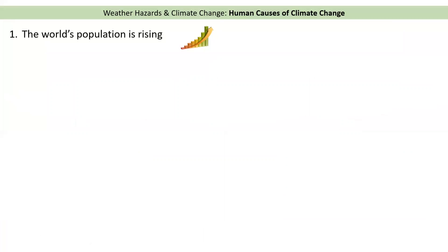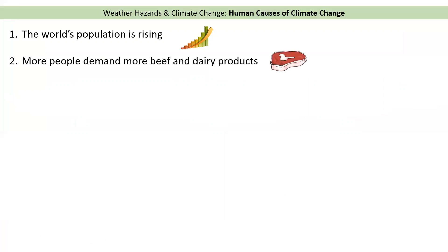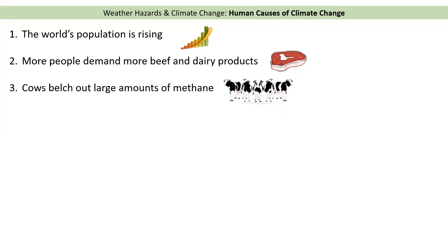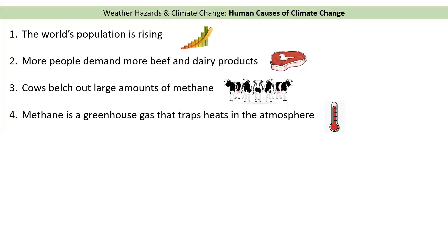There's another human cause of climate change, and this one is to do with methane. We know that the world's population is rising — we're over 7 billion people now and it will continue rising to 9 to 11 billion. More people means more demand for dairy products like milk and cheese, and more demand for beef. Therefore we need to rear more cows, and cows belch — which means burp — very large amounts of methane. Methane, as we've already talked about, is a greenhouse gas, so it traps heat in the atmosphere, a bit like carbon dioxide.